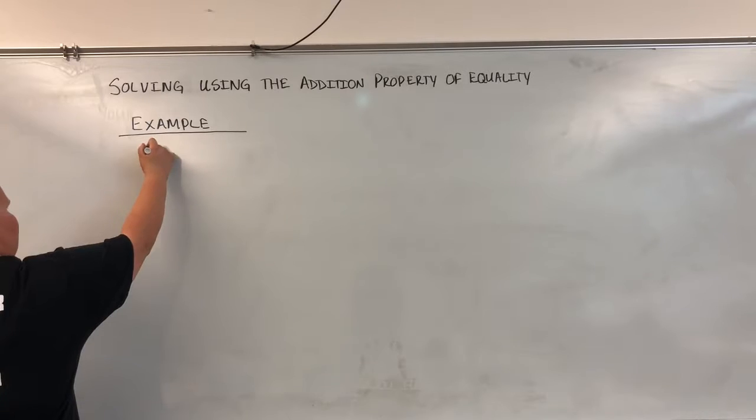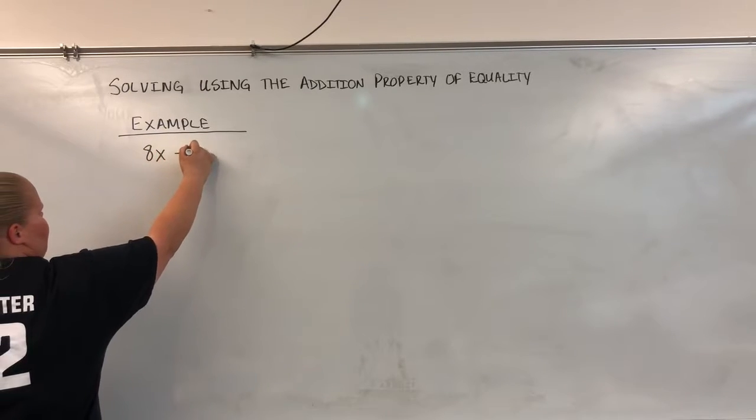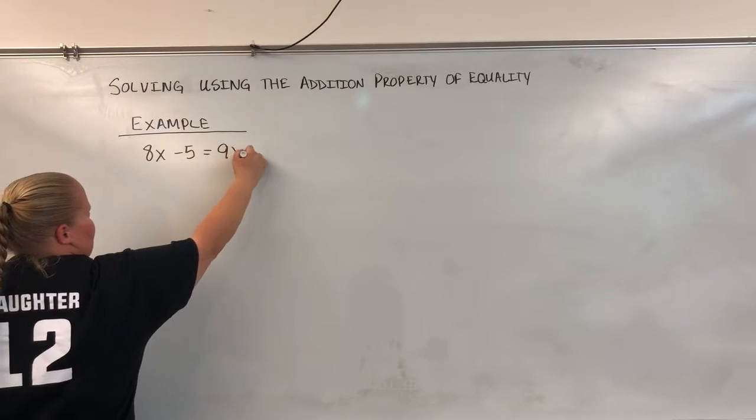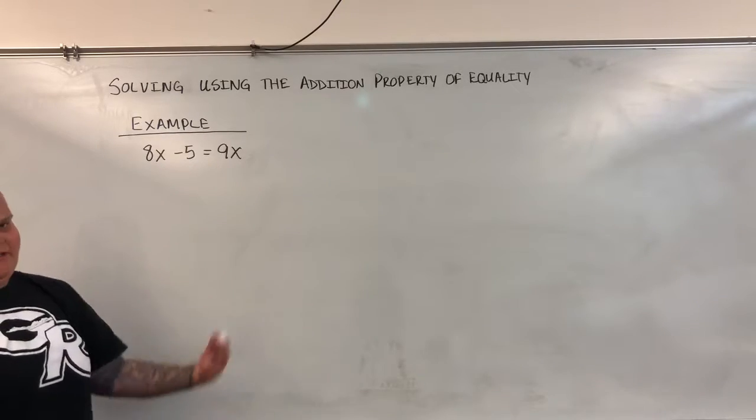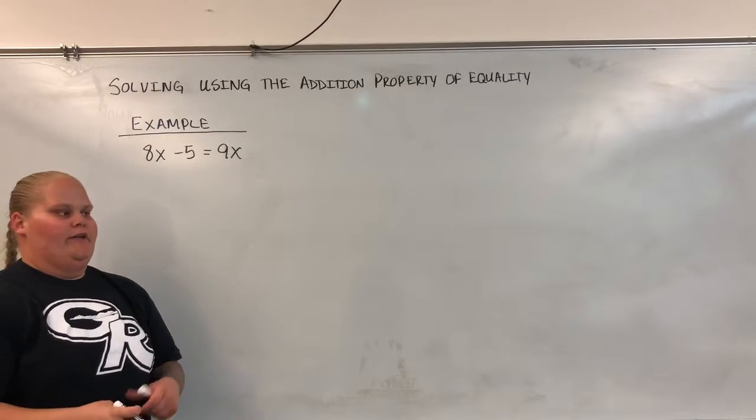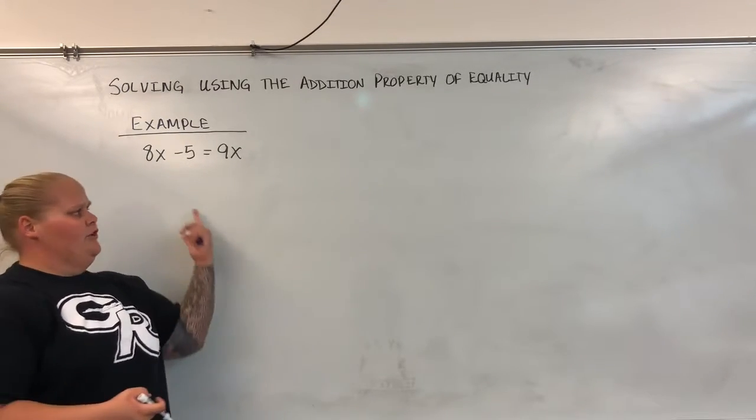The first one is going to be 8x minus 5 equals 9x. Now I know in the previous two examples we only had one variable. Here we have two.